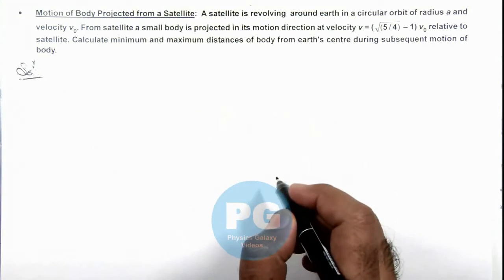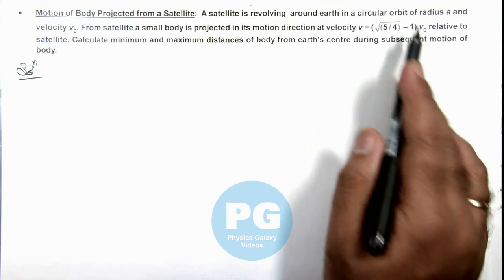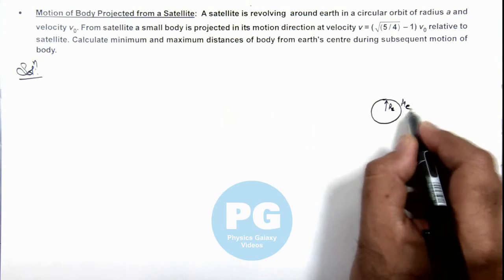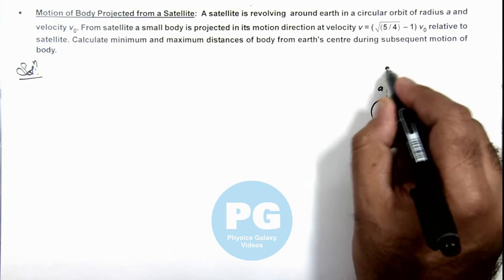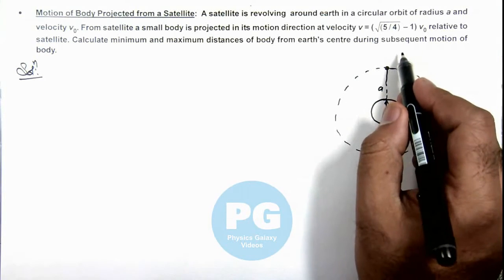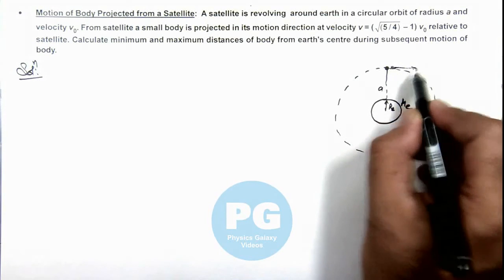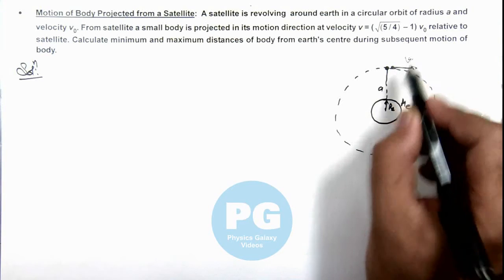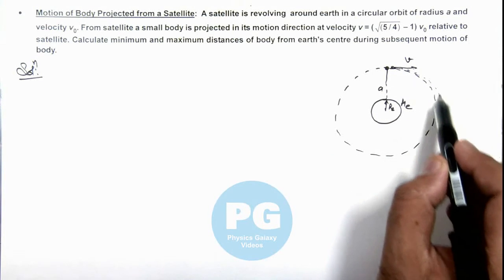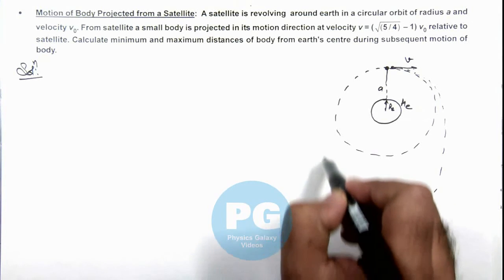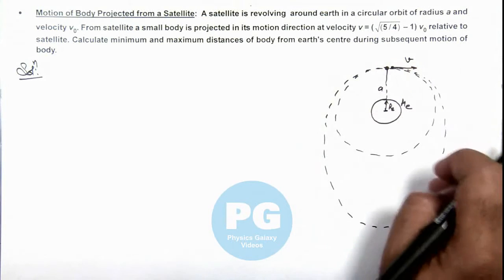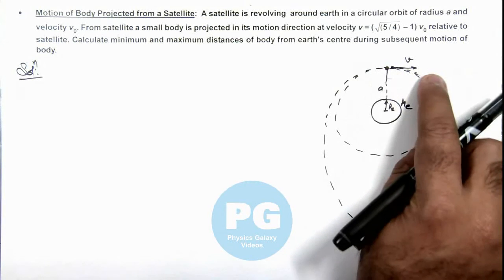If there is a satellite revolving around Earth in an orbit of radius a — here we can see, if this is Earth having radius rₑ and mass M — in an orbit of radius a, a satellite is revolving in a circular orbit with velocity v₀. A body is projected from the satellite in its direction of motion with speed v, and it follows an elliptical trajectory. In this situation the minimum distance of the trajectory from the Earth's center will remain a, as the body is thrown in the direction of motion.